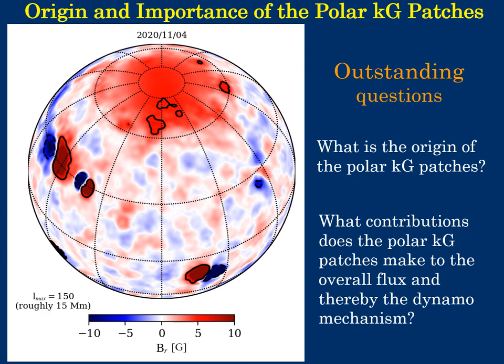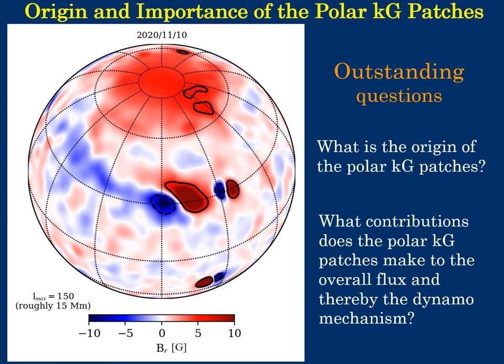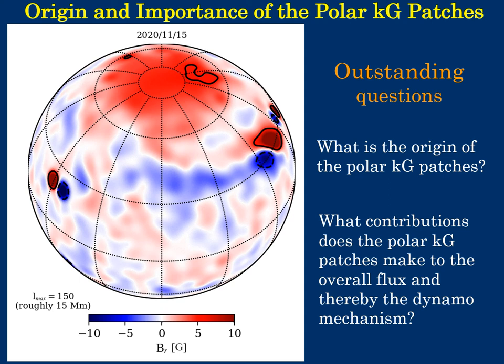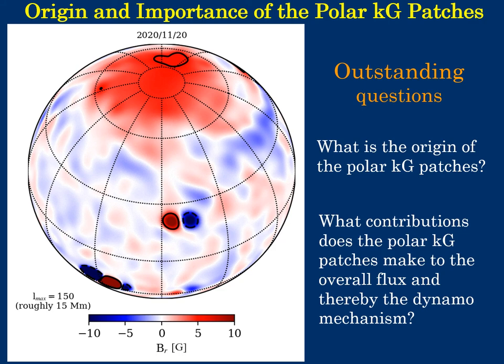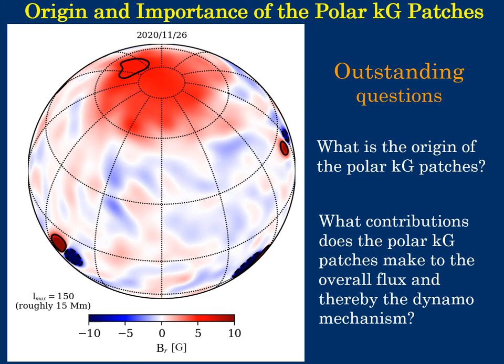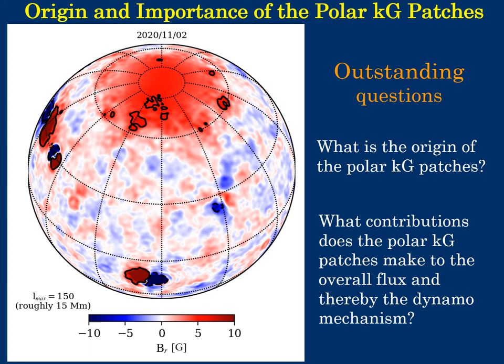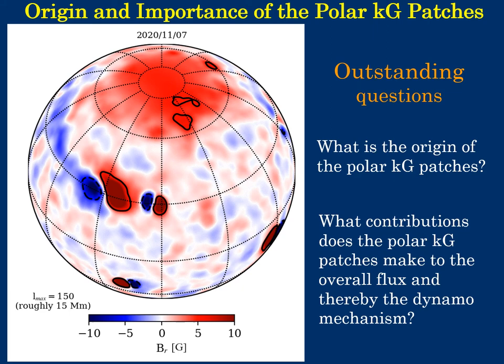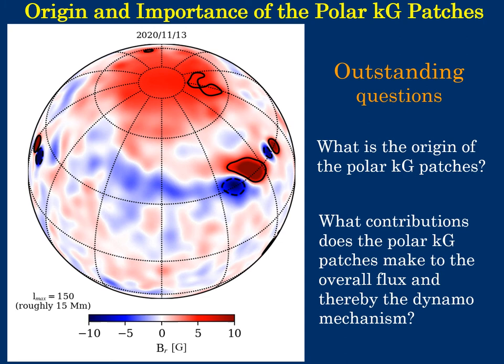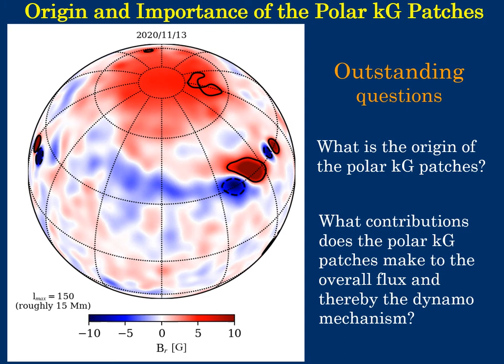We aim to perform such simulations to understand the origin and dynamics of these polar patches. Observations of the high latitude polar regions that constrain the properties of these high field patches, and the scale and lifetime of the surface convection and flow in this region, can critically inform our models and reveal the physics of these curious kilogauss regions. Accurate measurement of the flux contained in these strong field regions would also provide more accurate constraints on the polar cap flux and thus might lead to more accurate prediction of the following sunspot cycle.